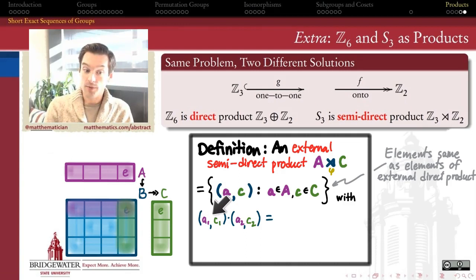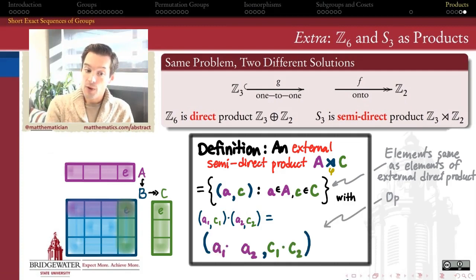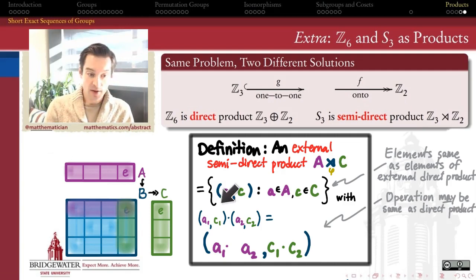If you give me two ordered pairs, A1, C1, A2, C2, and I want to form the product of those two ordered pairs, how will it work? Well, one way in which it could work is the way that it works in a direct product, where A1 and A2 multiply together using the operation of A, C1 and C2 multiply together using the operation of C, and that's that. So the operation here could be the same as a direct product. In other words, every direct product is also going to be a semi-direct product. We're just trying to expand our thinking, expand our horizons a little bit, and introduce the possibility that something else might happen here.